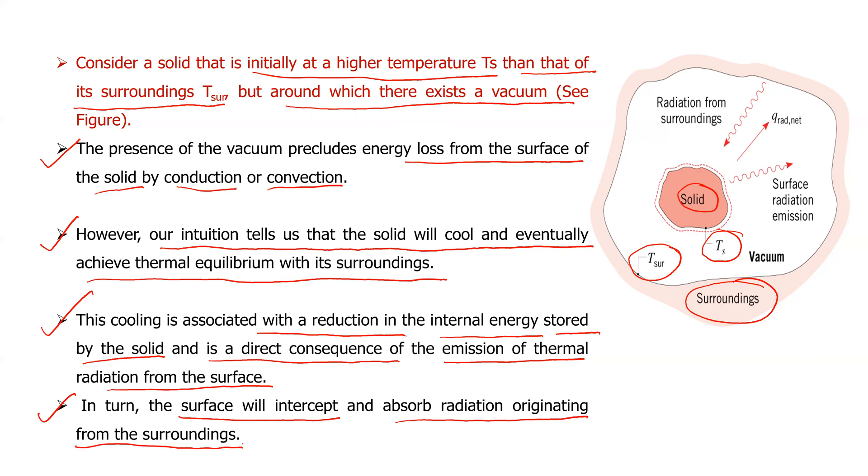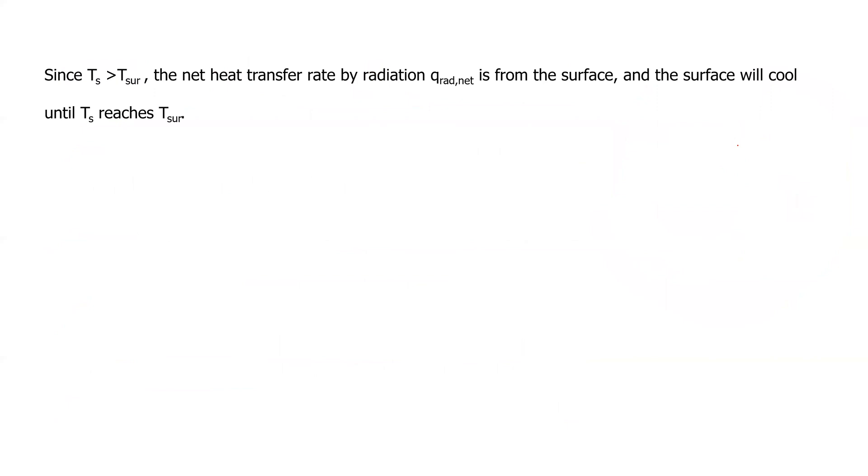Basically the solid is also emitting certain amount of the energy. The surroundings are also emitting certain amount of the energy. The energy which is leaving the solid will be reaching the surroundings and the energy which is coming from the surroundings, a part of it would be coming onto the solid surface also. Since Ts is greater than T surrounding which has been assumed in the present case, the net heat transfer rate by radiation, Q radiation net, is from the surface and hence the surface will cool until T of the solid reaches T surrounding. In equilibrium condition, Ts will be equal to T surrounding.